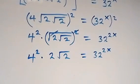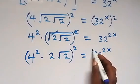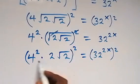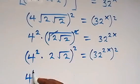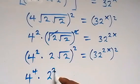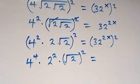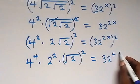Next step, we square both sides again. This square will affect 4 squared — when we multiply the power we have 4 raised to power 4 — then it will affect 2 and we have 2 squared, then it will affect root 2 and we have root 2 squared. This equals 32 raised to power 4x.